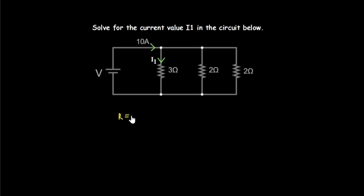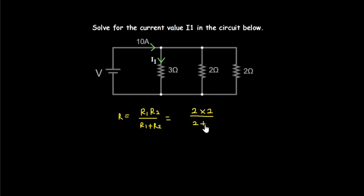To find the effective resistance of the two parallel 2-ohm resistors, we use R_eff equals R1 times R2 divided by R1 plus R2, which is 2 times 2 divided by 2 plus 2, equaling 4 divided by 4, giving 1 ohm. We replace those two resistors with a single 1-ohm resistor, reducing the circuit from three branches to two.